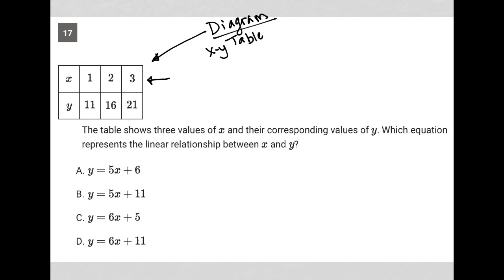So we have our X values in the first row. We have our Y values in the second row. And of course, each of these pair together to give us ordered pairs. The question goes on to say the table shows three values of X and their corresponding values of Y. Which equation represents the linear relationship between X and Y?